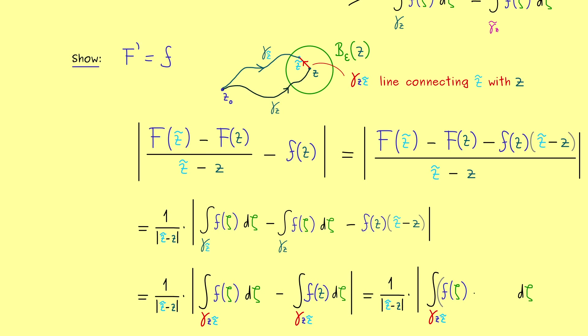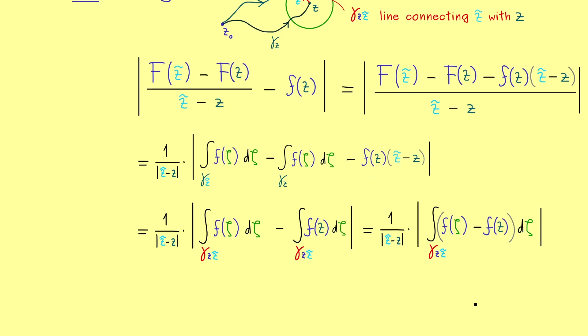Okay, then in the next step we simply rewrite both integrals into a single one. And then you should see, finally we can use an estimate here. And in fact, this will be the estimate we have discussed in part 19. It tells us that the whole contour integral is bounded by the maximum of the function times the length of the curve.